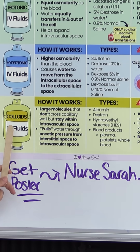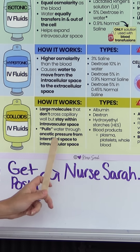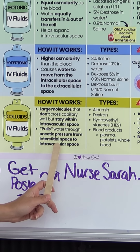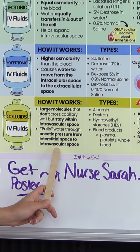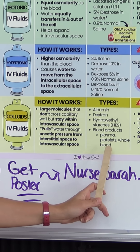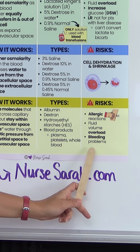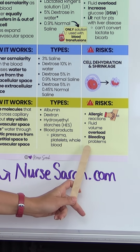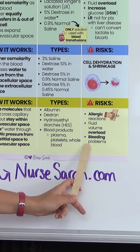Then lastly we have colloids. Colloids are these really large molecules that don't cross the capillary wall — they're going to stay within your intravascular space. Therefore they're going to pull water through oncotic pressure from the interstitial space to the intravascular space. Here are the types. Risks include allergic reactions, fluid volume overload, and bleeding problems.